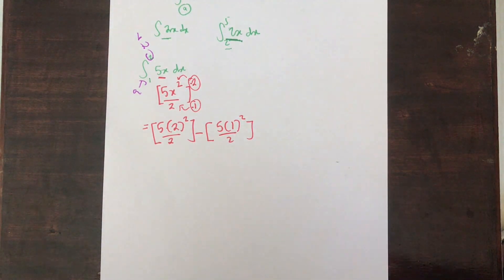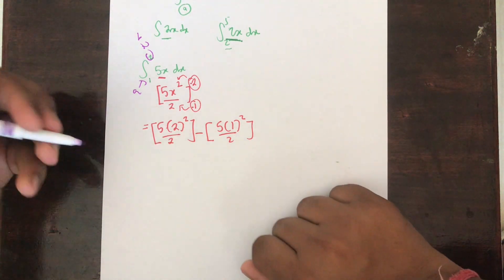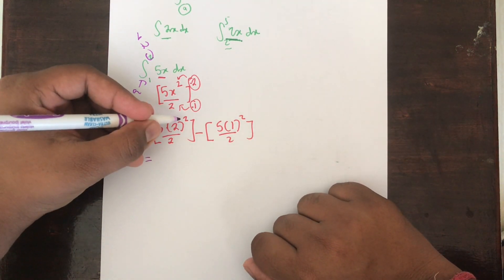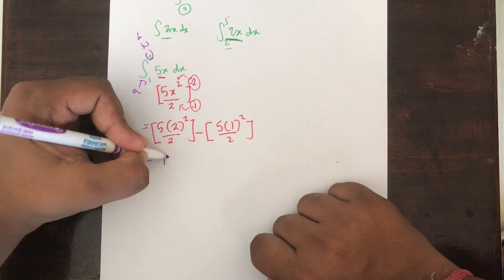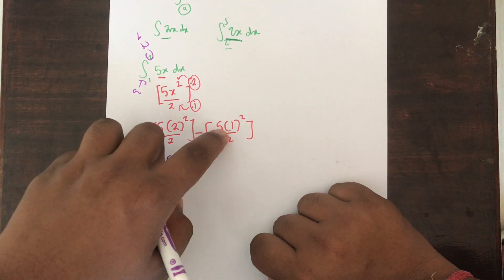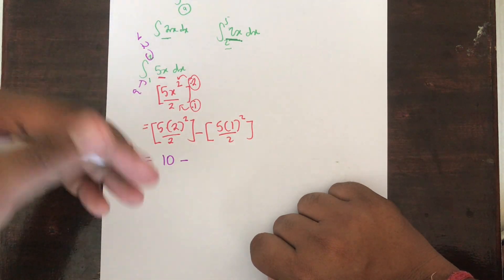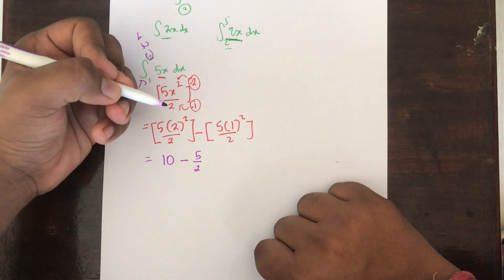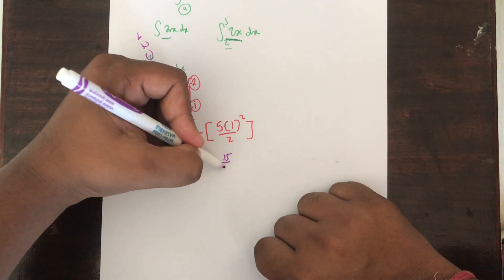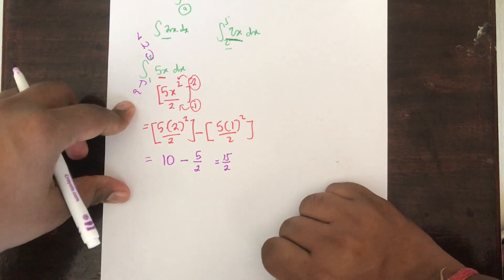Once you understand that, just compute it. 2 squared is 4, 4 times 5 is 20, and 20 divided by 2 is 10, minus 1 times 1 is just 1, 1 times 5 is 5 divided by 2, which is 5 over 2. So 10 minus 5 over 2 equals 15 over 2. That's your answer.